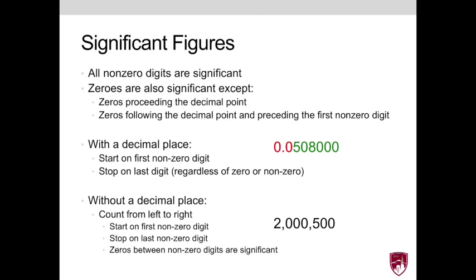So for example, consider the number 2,500. If we start and stop on the first and last non-zero digits, the numbers between the 2 and 5 are all significant, even including those zeros.